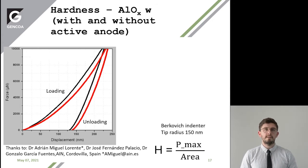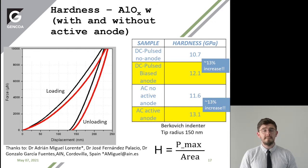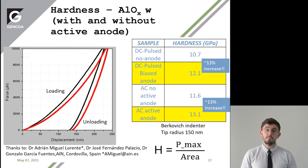Drawing your attention to the table on the right: DC pulsed with no anode versus DC pulsed with an anode — you can see there's a 13% increase in hardness. And then with AC system without the active anode compared to AC system with the active anode, you can also see a 13% increase in aluminium oxide hardness.